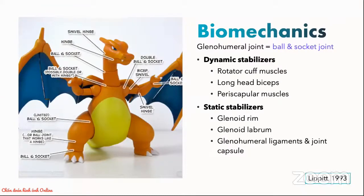These structures act in two major mechanisms for stabilization: concavity compression and scapulohumeral balance. In particular, the presence of an intact glenoid labrum is important to both mechanisms.